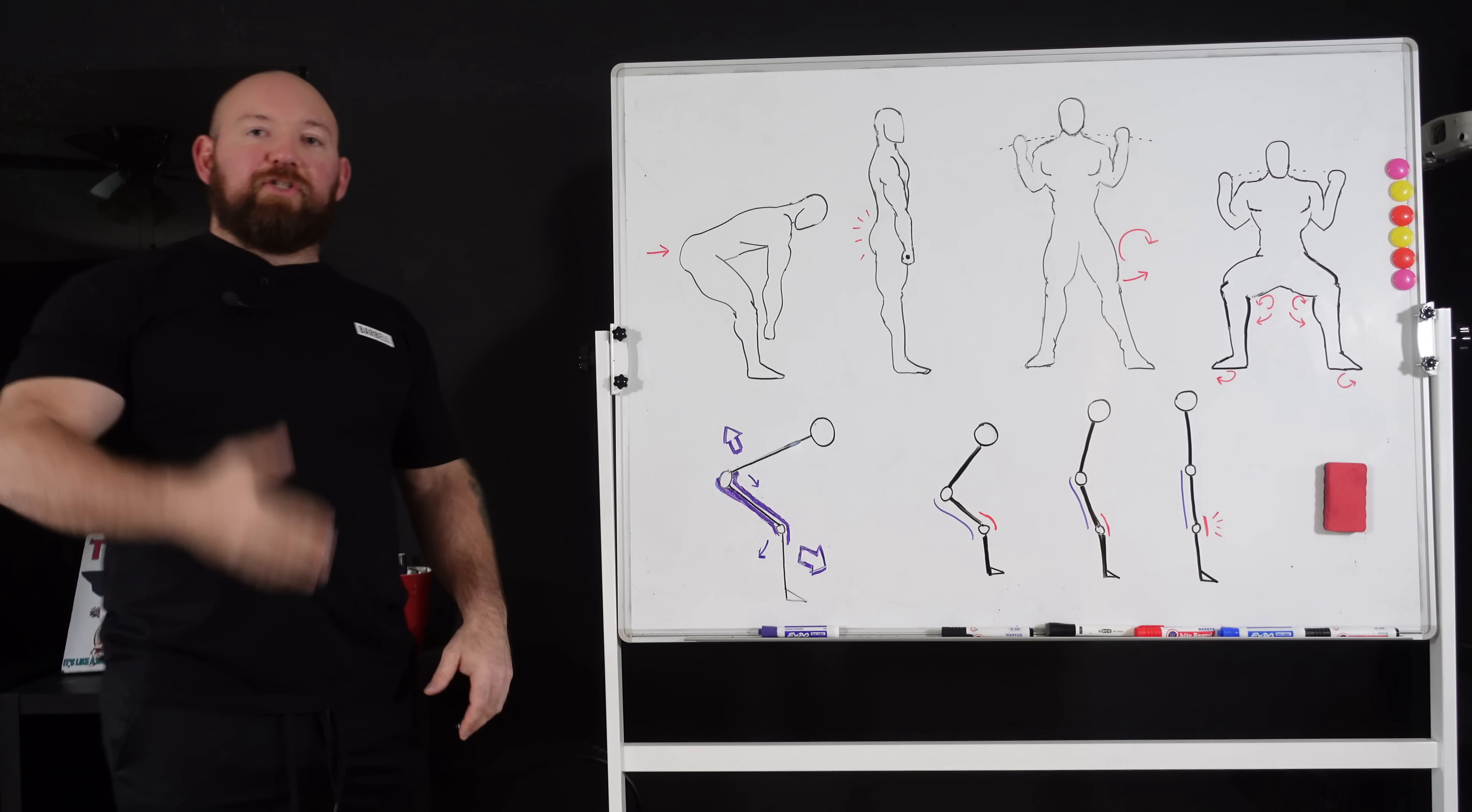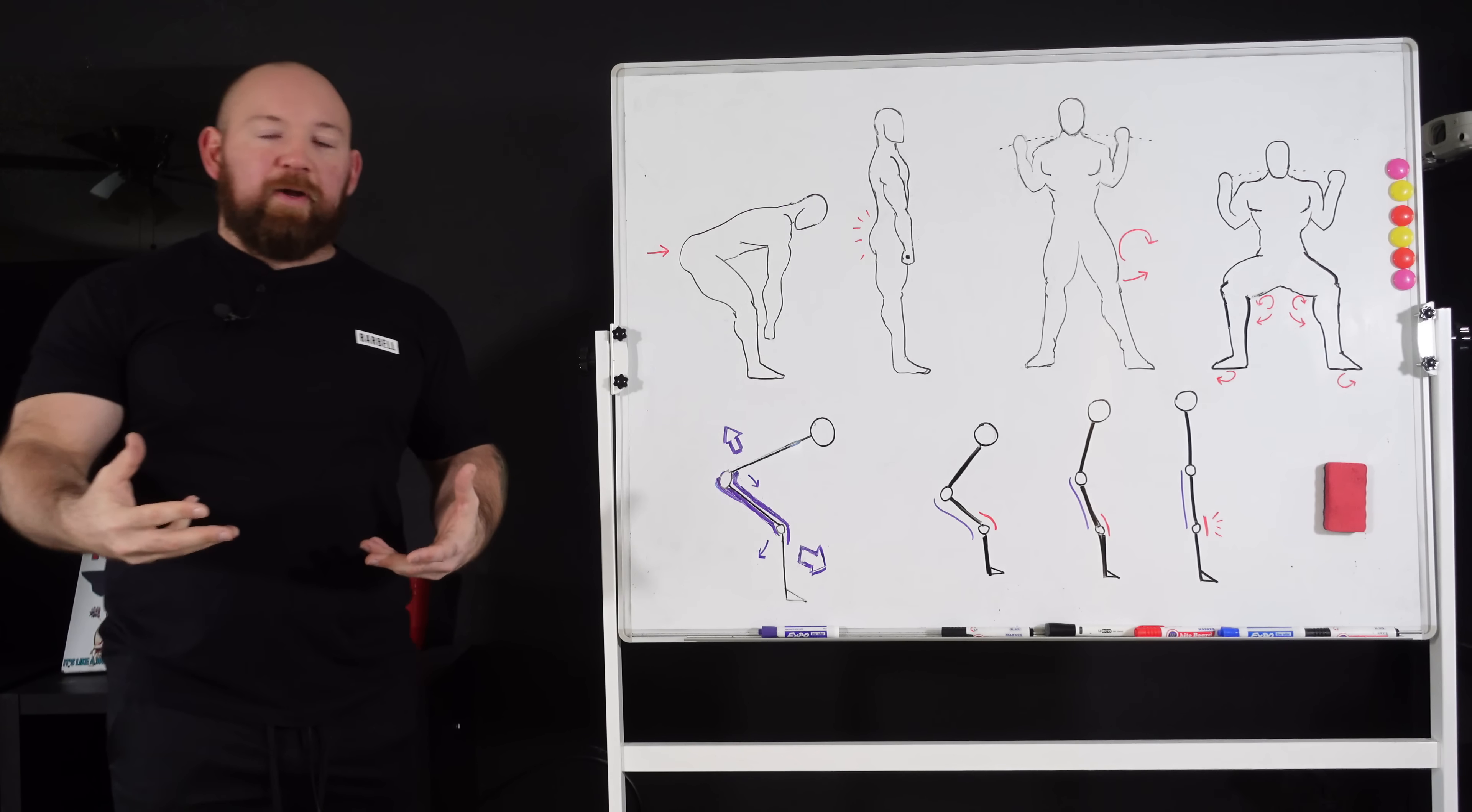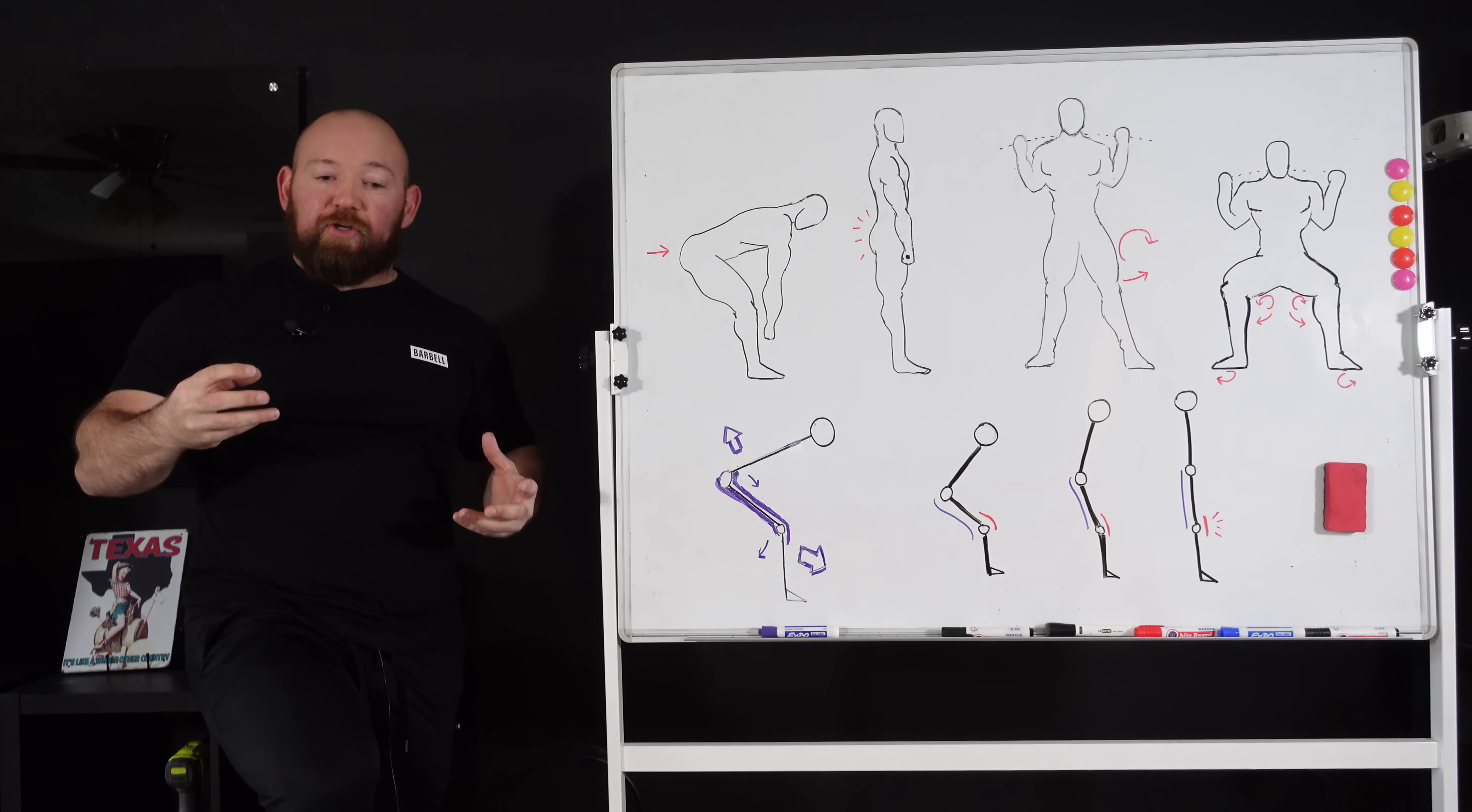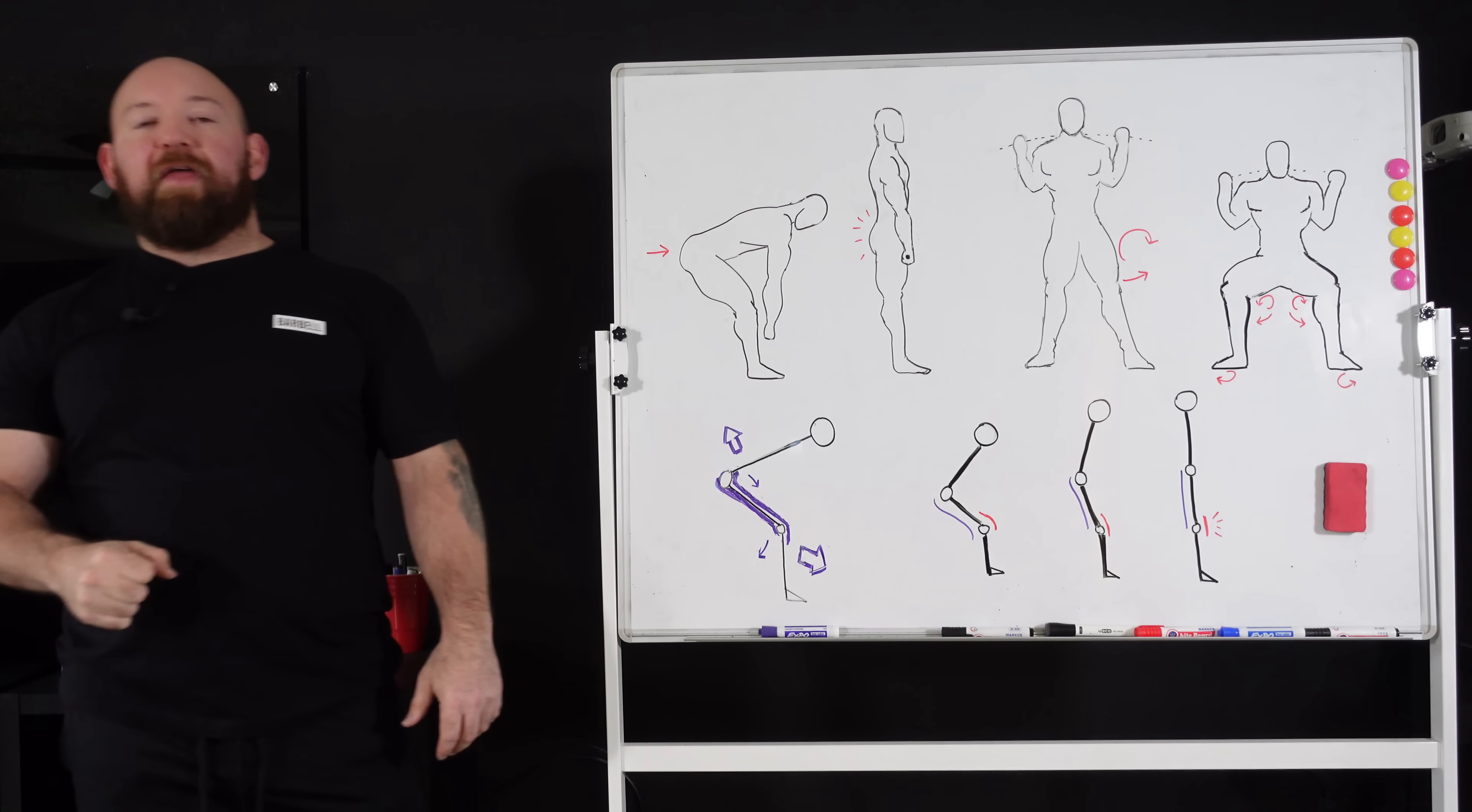So as you're moving through a squat, you'll notice that the hamstrings aren't going through a stretch shortening cycle like other single joint muscles do. Your quadriceps or most of the muscles of your quadriceps that just go over the knee. As you flex your knee, they stretch. As you extend your knee, they contract. And it's that simple back and forth. Your hamstrings do not go through that movement.